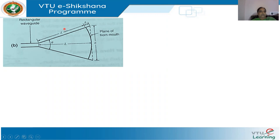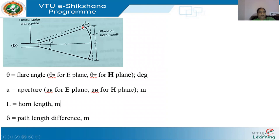Recapping the mathematics: this is a side view of a horn antenna fed by a rectangular waveguide that flares out to give aperture A. The aperture plane is the horn mouth, and the distance L is between the throat and the aperture. Theta is the flare angle, L is the path length, and delta is the path length difference. L plus delta is the total radial distance. Depending on whether flaring is in the E plane or H plane, we have theta_E or theta_H, and apertures a_E in the E plane and a_H for the H plane.